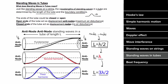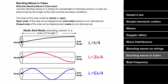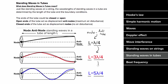If one end is closed, that end becomes a displacement node while the open end remains an antinode, giving node-to-antinode standing waves. The largest possibility is one-fourth of a wavelength, so the tube length equals lambda/4. The next is three-fourths of a wavelength. This is the same progression as node-antinode strings: lambda/4, 3-lambda/4, 5-lambda/4 — any odd-integer multiple of lambda/4 are the allowed standing wave lengths.